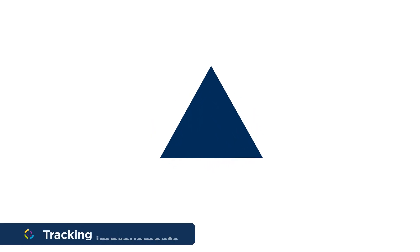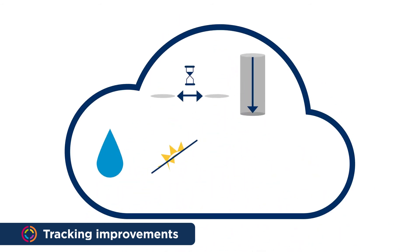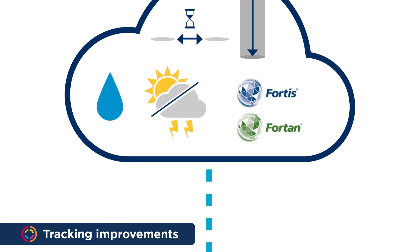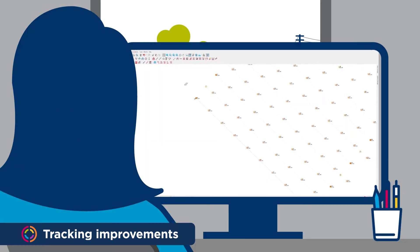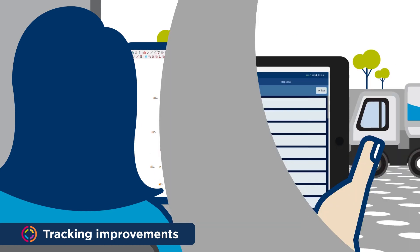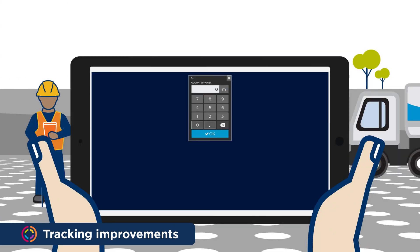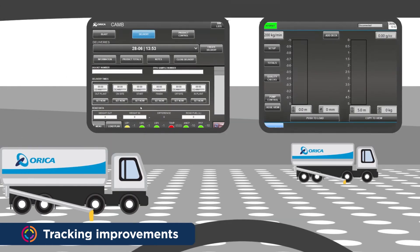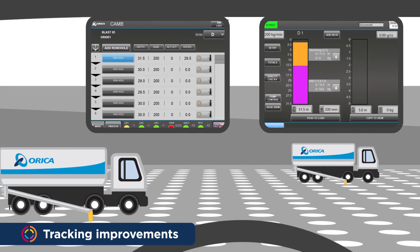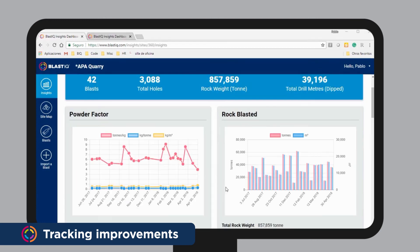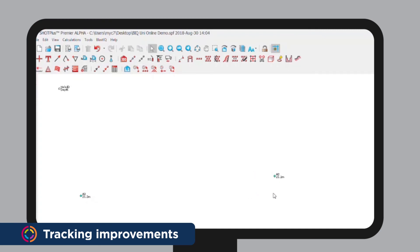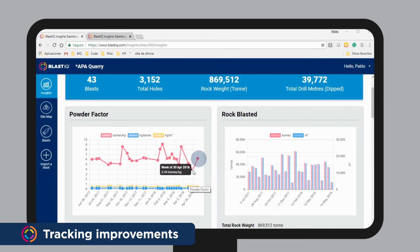Are you achieving the desired powder factor or fragmentation? By storing every variable associated with your blast every time, Blast IQ illustrates the impact of your improvements. Over time, this builds a powerful picture of optimal process. Starting with a baseline design in SHOT Plus, Blast IQ then lets you record hole variations like water content by location in Blast IQ Mobile, captures the product mix and amounts used by the Blast IQ enabled delivery system, and allows you to enter weather details and blast outcomes in Blast IQ Platform. Did these variables give you sub-optimal results? Adjust a lever like hole spacing or product mix in your next design, and track the outcome until you hit your perfect blast.